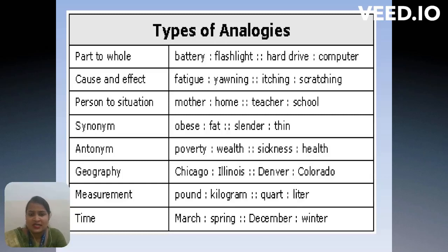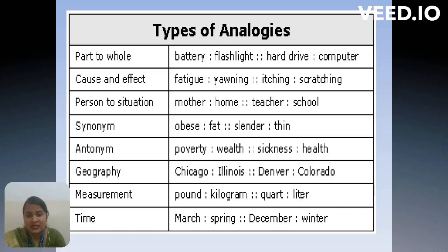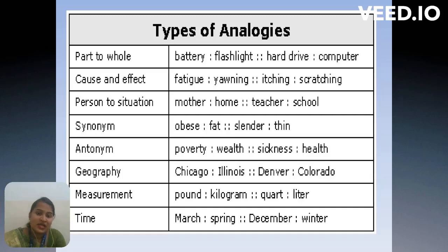Here are more examples. Person to situation: mother means home — normally when we go home, we search for mother. Teacher means school. Then synonyms: obese and fat, slender and thin. And antonyms: poverty and wealth, sickness and health.